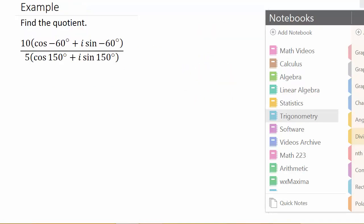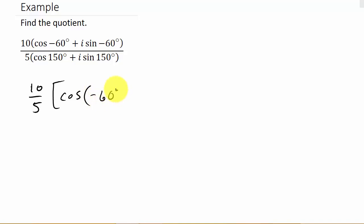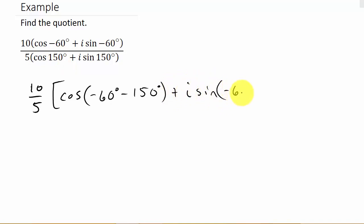So let's look at our example. Here we want to divide these two. First we know it's R1 over R2, so that's going to be 10 over 5 times the cosine of negative 60 degrees minus 150. So remember it's theta 1 minus theta 2, plus i times sine of negative 60 degrees minus 150 degrees.